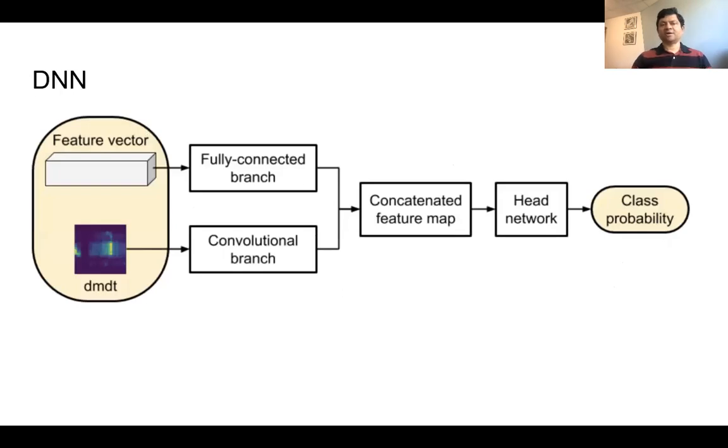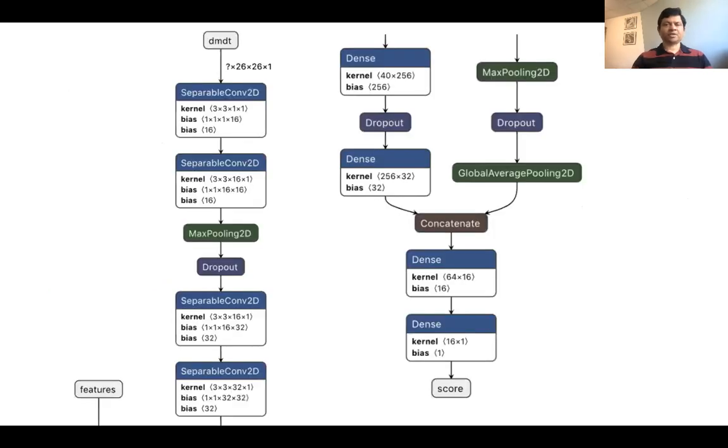The DNN is a more standard neural network. You see the feature vector, the different features we talked about from a light curve. Those are in a fully connected branch. And then they are concatenated with the feature map that comes from the convolutional branch, which operates on the DMDT. So again, remember that DMDT are the images that we created from light curves. And then those are given as input to the CNN. The output of that is connected with the fully connected branch from the feature vectors.